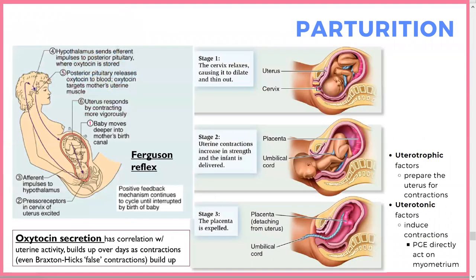Parturition: the key concept is a positive feedback loop of oxytocin. Stretching of the birth canal sends signals to the hypothalamus, which signals the posterior pituitary to release oxytocin. Oxytocin induces uterine contractions; those contractions stretch the canal more, releasing more oxytocin, and so forth. The stages are: cervix relaxes, uterine contractions increase, baby is delivered, and placenta is expelled.